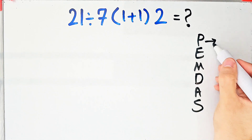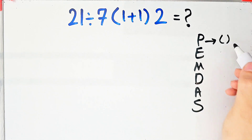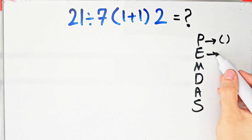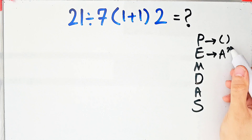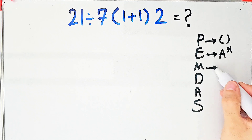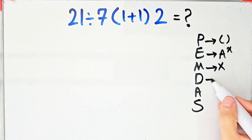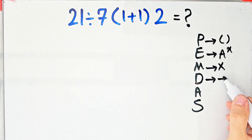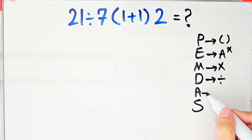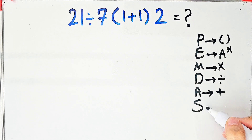P stands for parentheses, E stands for exponent, M stands for multiplication, D stands for division, A stands for addition, and S stands for subtraction.